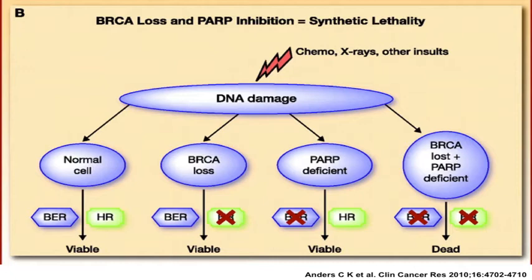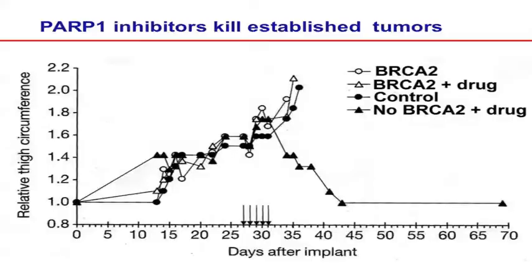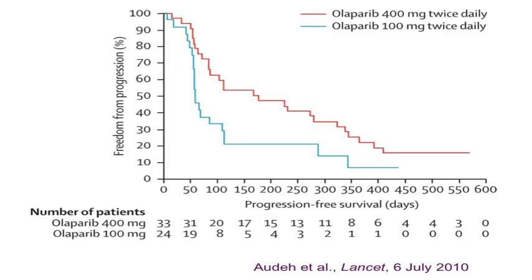BRCA's double-strand break repair seems to be specific to double-strand breaks rather than all forms of DNA insult. Shown here is experimental data: tumors were implanted into mice that either had BRCA2 or lacked BRCA2. Tumors kept growing in all control mice and all treated mice except those missing BRCA2 — the treatment plus BRCA2 deficiency made the tumors go away in mice. This work was published several years ago and was somewhat fast-tracked into clinical trials.